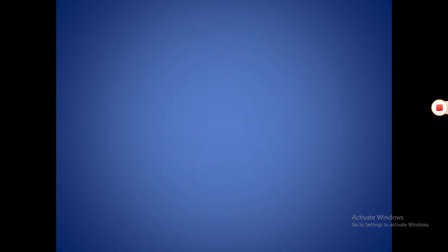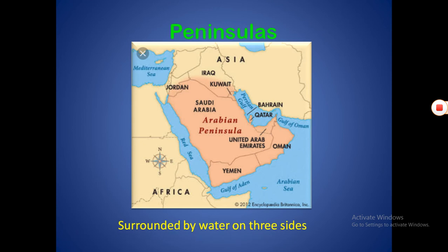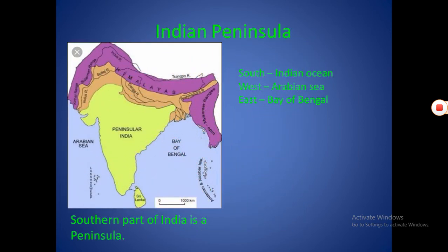Peninsulas. A peninsula is a land area surrounded by water on three sides. The southern part of India is a peninsula — it is called the Indian Peninsula. It has the Arabian Sea on the west, the Indian Ocean on the south, and the Bay of Bengal on the east.